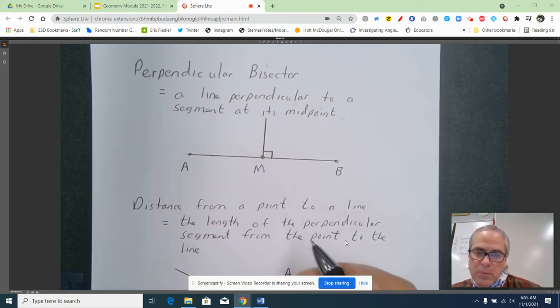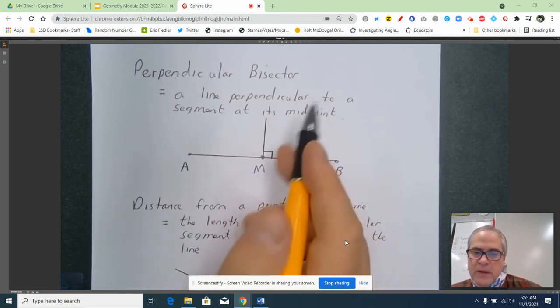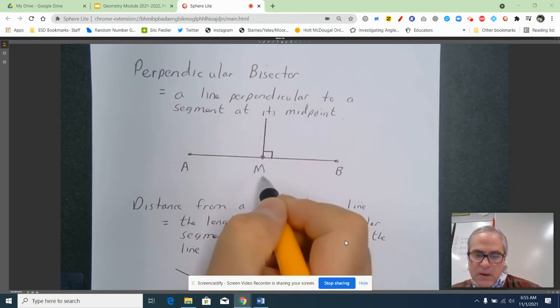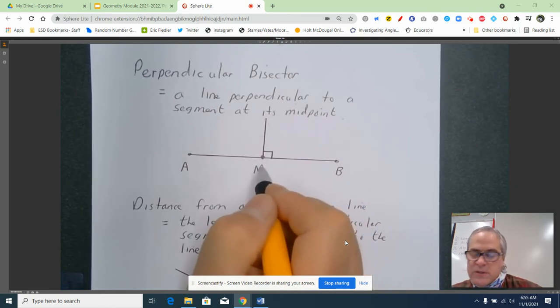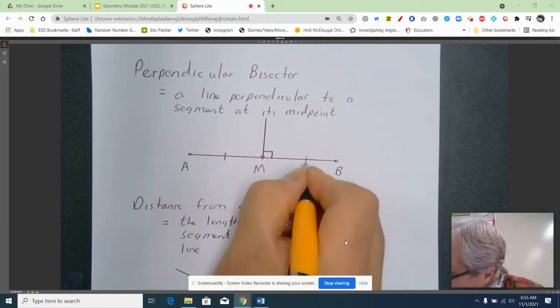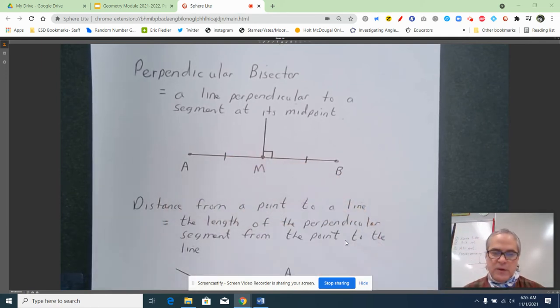Now there's one more thing I need to do to properly mark this drawing. It's perpendicular to a segment at its midpoint. Well, you called it M, Fiedler - doesn't that mean it's the midpoint? No. To show that it's a midpoint, I need to put in tick marks here. There is a properly marked perpendicular bisector. Make sure you study that and know what that phrase means.